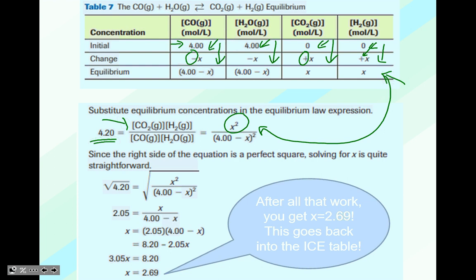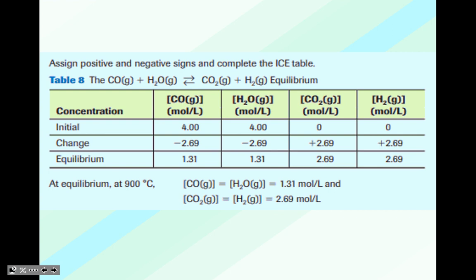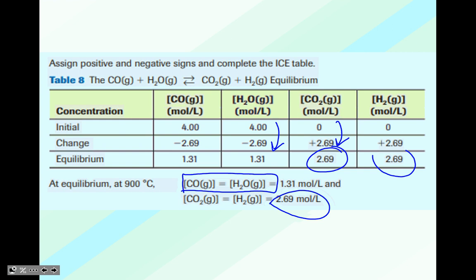x times x gives x squared, and the denominator is (4.00 minus x) squared. Taking the square root of everything gives 2.05 equals x over (4.00 minus x). Solving for x: bring the denominator over to get x equals 2.05 times (4.00 minus x), and solving gives x equals 2.69. Going back into the ICE table with x = 2.69: the products CO2 and H2 each have a concentration of 2.69 moles per liter, and the reactants CO and H2O each have a concentration of 1.31 moles per liter.